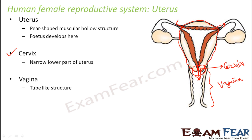The last portion is the vagina, which is a tube-like structure that acts as a path. Sperm discharge occurs here. During sexual intercourse, the penis enters this area and the urethra releases the sperms. The sperms then travel to reach the egg, and that is how fertilization takes place.